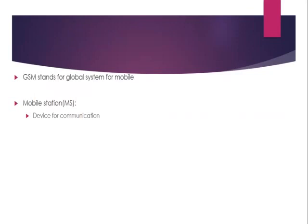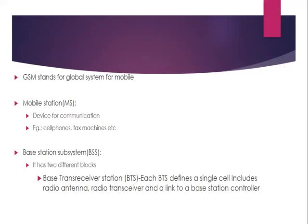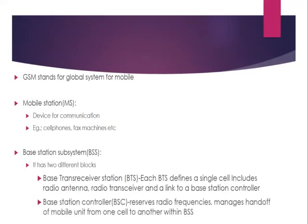The mobile station is the device used for communication, such as cell phones and fax machines. The base station subsystem connects to the MS via radio interfaces and includes two blocks: base transceiver station and base station controller. Every mobile station connects to the base transceiver station of its area. The base transceiver station sends the signal to the base station controller. Many base transceiver stations are connected to one base station controller, which in turn is connected to the mobile switching center.